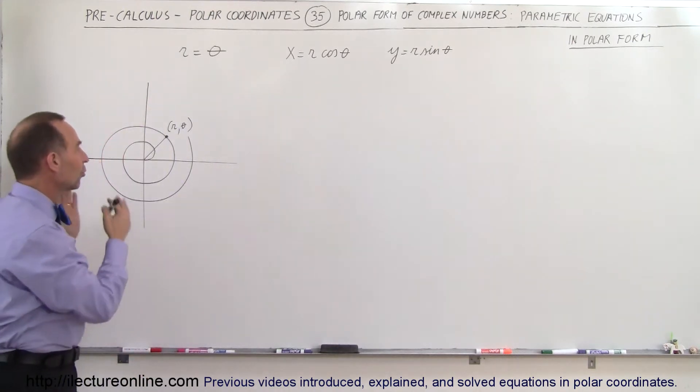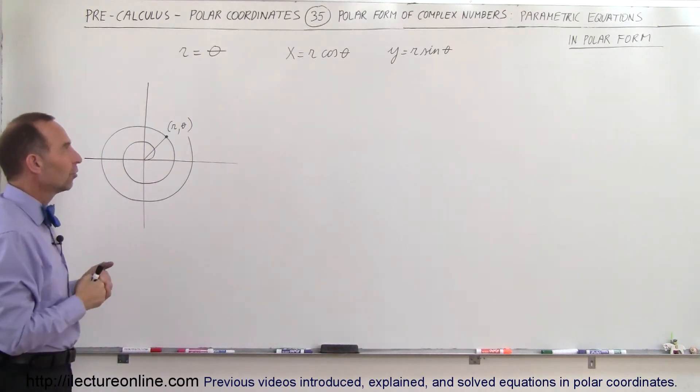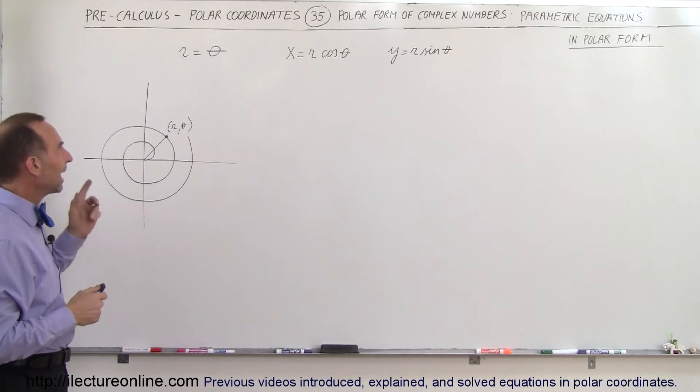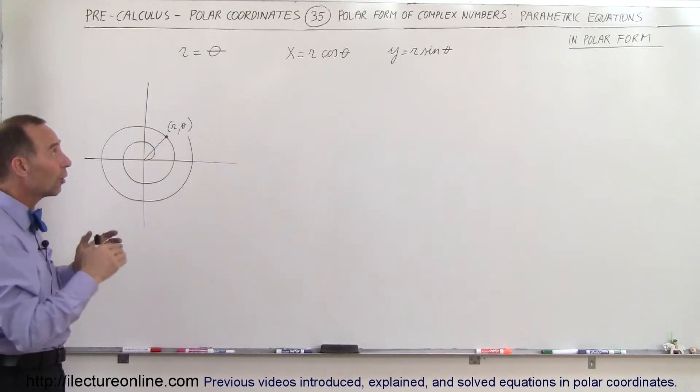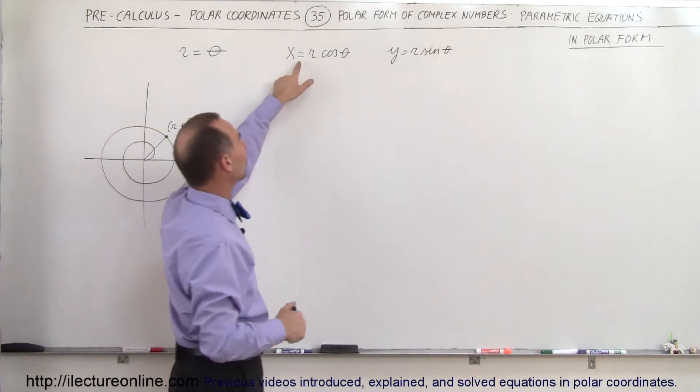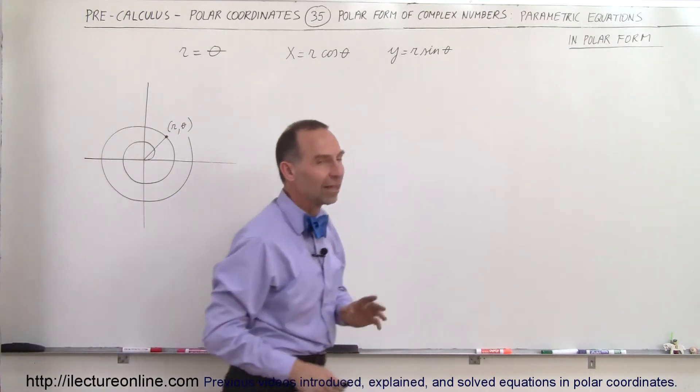Now, this is of course just a graph and has nothing to do with any time involvement. So if we now express x, the position x and the position y on this graph in terms of r and theta, we would then have this relationship: x would be r times the cosine of theta and y would be equal to r times the sine of theta.